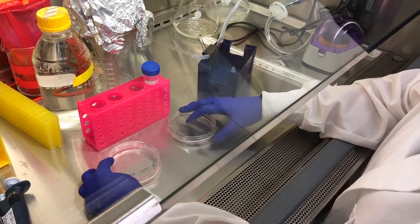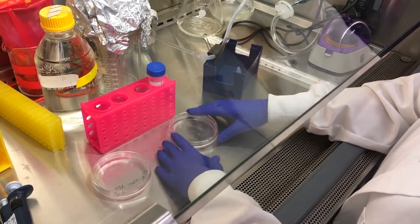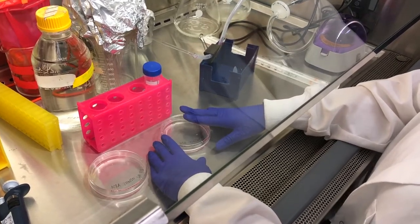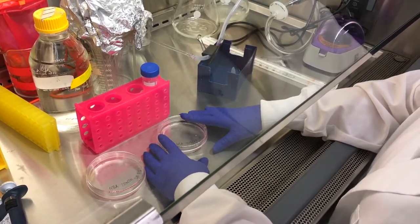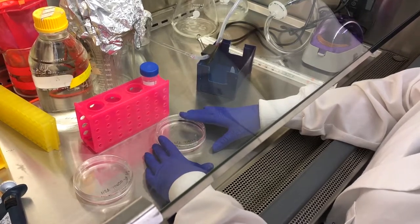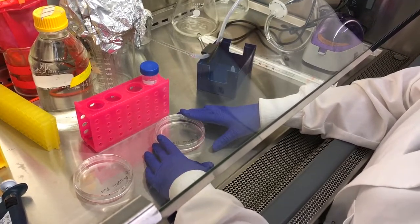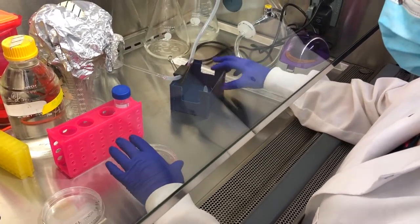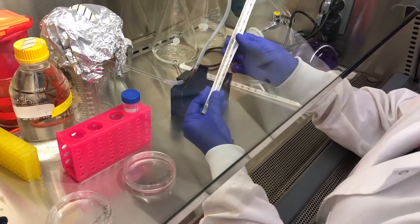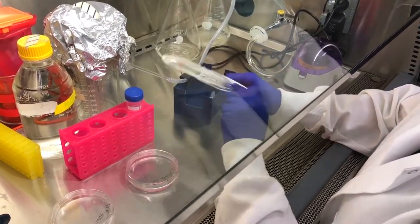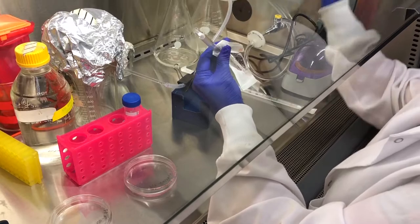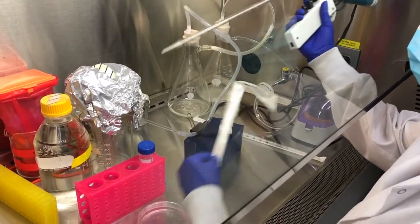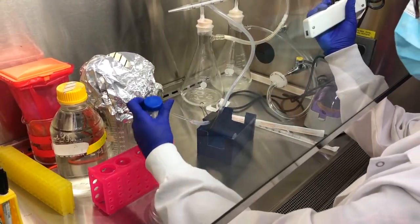So because we're doing a one to two split, this just means that we're going to take five mils of our re-suspended cells and add them to a new plate with five mils of fresh media. So going back here, we have our cells that are adhered to the bottom of our original plate. I'm just going to go ahead and re-suspend them with a new pipette. And I'm going to re-suspend them in 10 mils of fresh media.